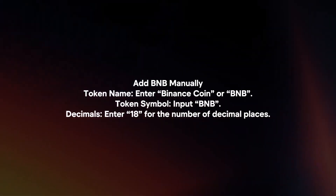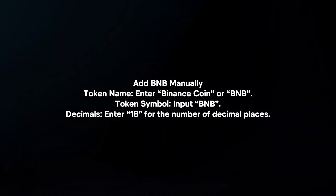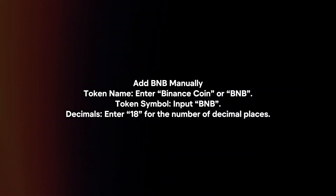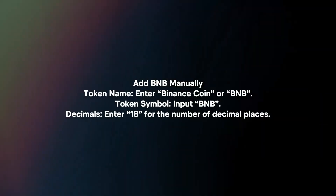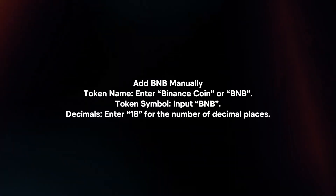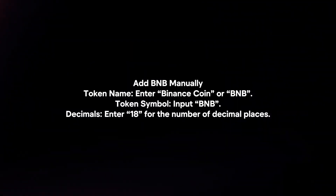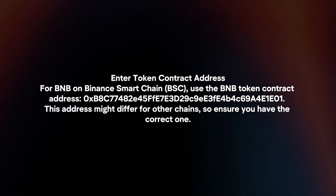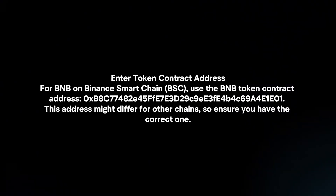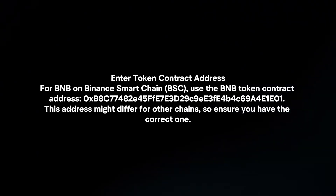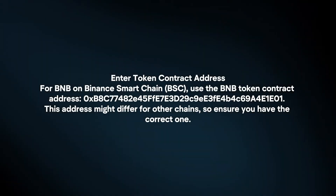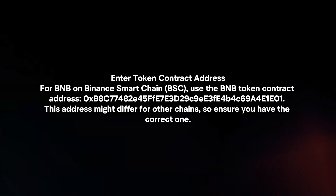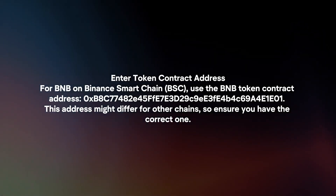Add BNB manually. For the token name, enter 'Binance Coin' or 'BNB'. For the token symbol, input 'BNB'. For decimals, enter 18 for the number of decimal places. Then enter the token contract address — for BNB or Binance Smart Chain, use the BNB token contract address. This address might differ from other chains, so ensure you have the correct one.